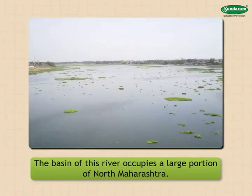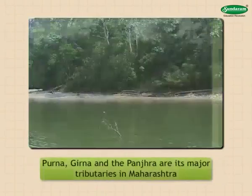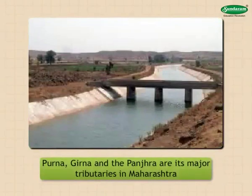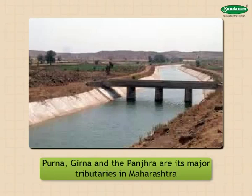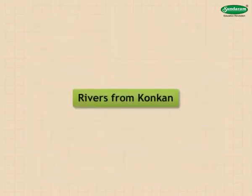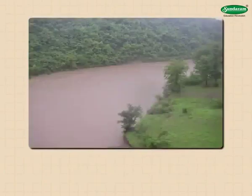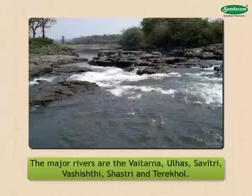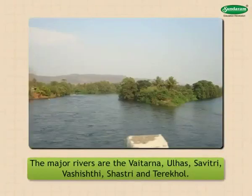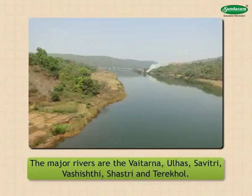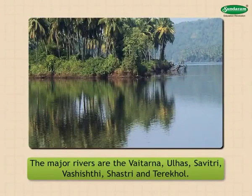River Tapi: the basin of this river occupies a large portion of North Maharashtra. This river has its source in Madhya Pradesh. The Purna, Girna, and Panjra are its major tributaries in Maharashtra. This river further flows through Gujarat before meeting the Arabian Sea. Rivers from Konkan: the major rivers in Konkan are west-flowing rivers, including the Vaitarna, Ulhas, Savitri, Vasishti, Shastri, and Terekhol.